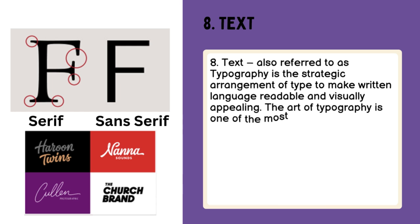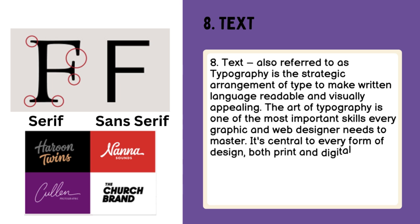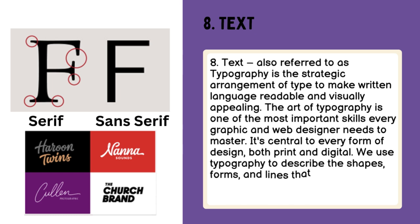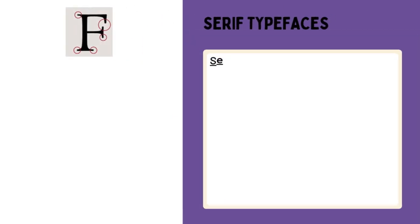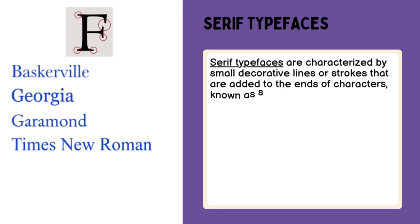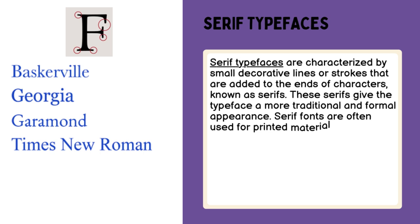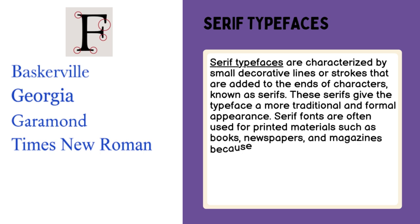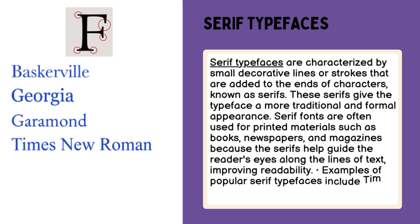The art of typography is one of the most important skills every graphic and web designer needs to master. It's central to every form of design, both print and digital. We use typography to describe the shapes, forms, and lines that make up a letter. There are two common style categories of text: serif and sans-serif. Serif typefaces are characterized by small decorative lines or strokes added to the ends of characters, known as serifs. These serifs give the typeface a more traditional and formal appearance. Serif fonts are often used for printed materials such as books, newspapers, and magazines, because the serifs help guide the reader's eyes along the lines of text, improving readability. Examples of popular serif typefaces include Times New Roman, Georgia, and Garamond.